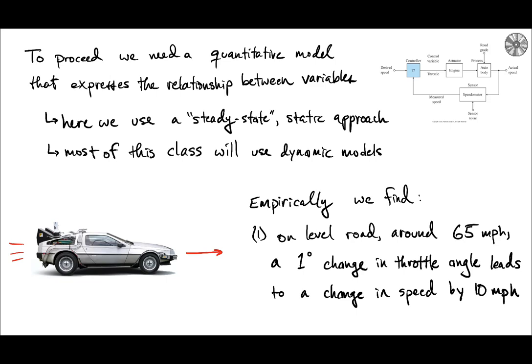So in order to build such a model we need to have some sort of observation or knowledge about the system. In this case we observe that on a level road around 65 miles per hour, if the throttle is increased by one degree that leads to a change in speed by 10 miles per hour of the car. Vice versa if the throttle is reduced by an angle of one degree the speed is also reduced by 10 miles an hour.